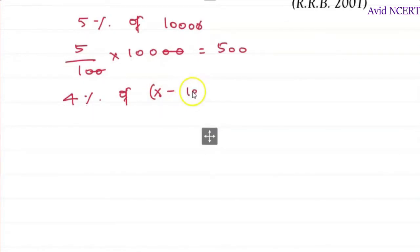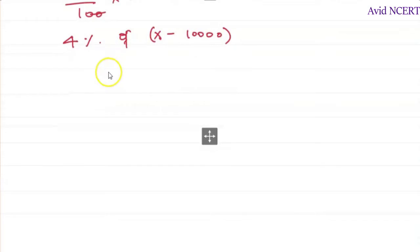So that would be x minus 10,000, which is 4 by 100 times x minus 10,000.